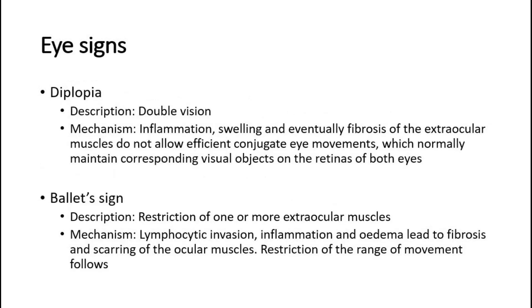Another eye sign is diplopia, meaning the patient has double vision. It is due to inflammation, swelling, and eventually fibrosis of the extraocular muscles, which do not allow efficient conjugate eye movements that normally maintain corresponding visual objects on the retinas of both eyes. Ballet's sign is the restriction of one or more extraocular muscles. The mechanism is due to lymphocytic invasion, inflammation, and edema, which lead to fibrosis and scarring of the ocular muscles, followed by restriction of the range of movement.